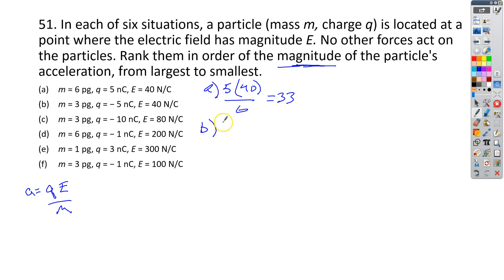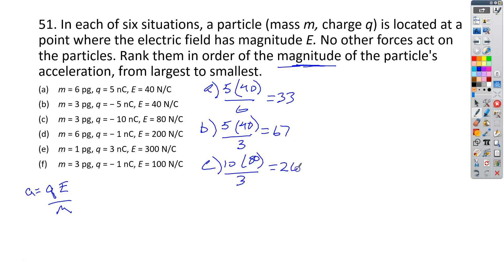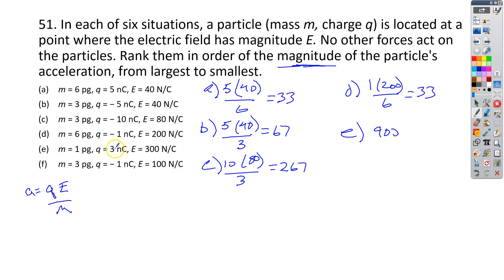For letter B, we've got a charge of negative 5, but we can just make it positive, times 40, over 3, so this is 67 units. For letter C, we've got 10 times 80 all over 3, so this one is 267. For letter D, we have 1 times 200 divided by 6, so we get 33 again. For letter E, this one's just 900, because we have 3 times 300 divided by 1. And finally letter F, you should end up with 33 again.